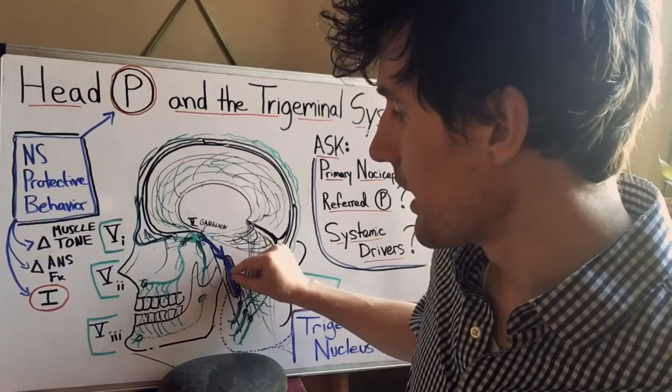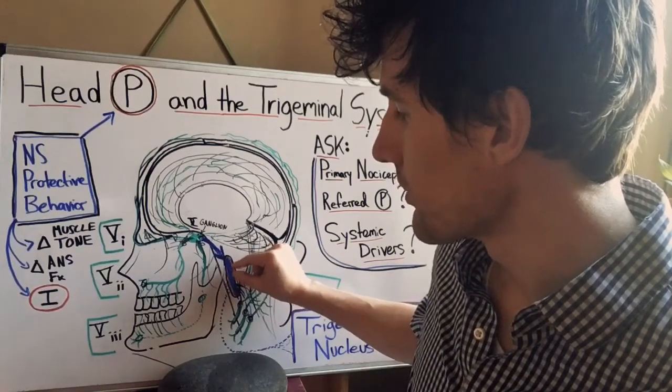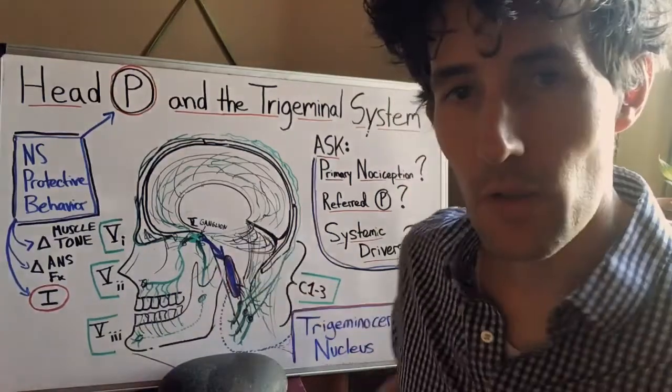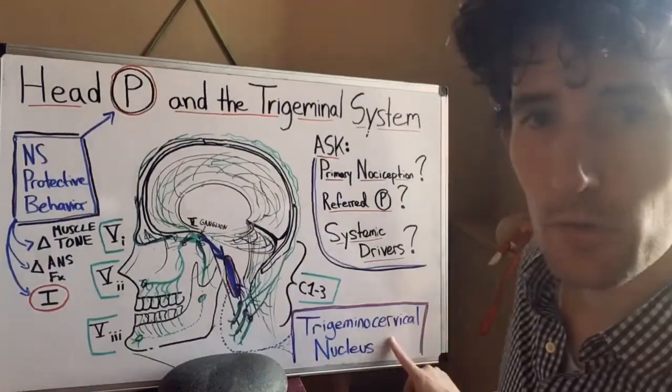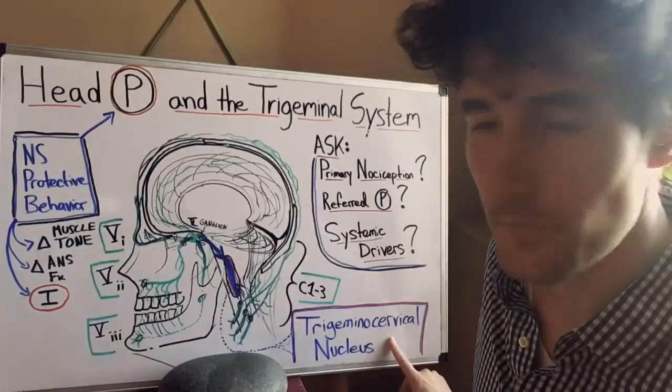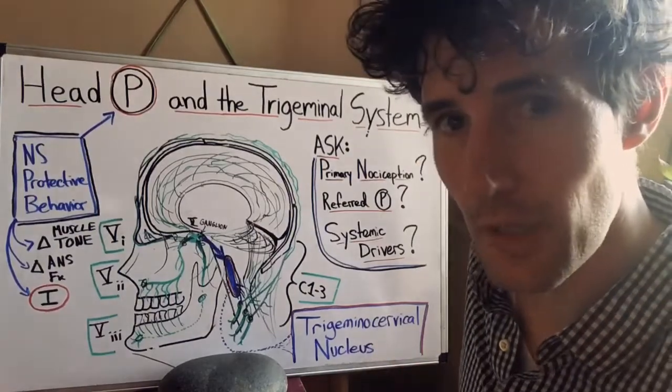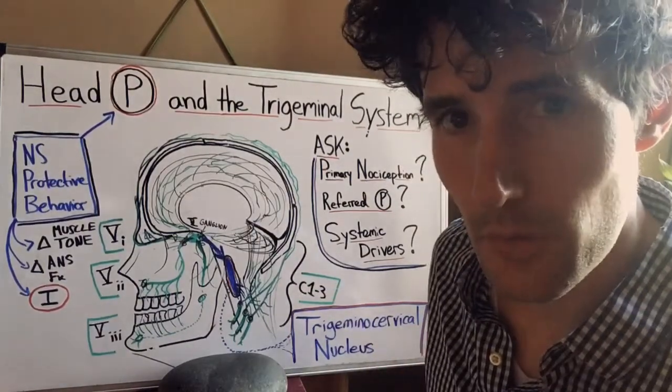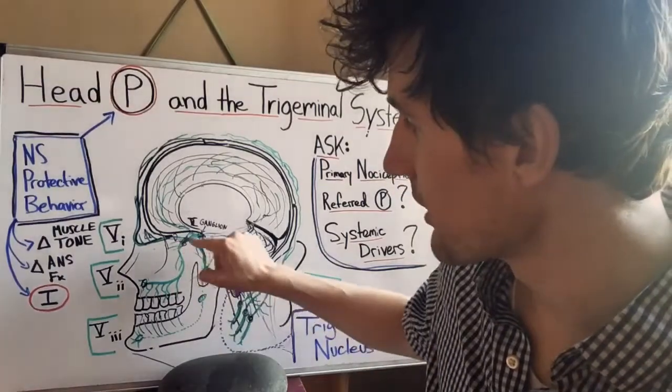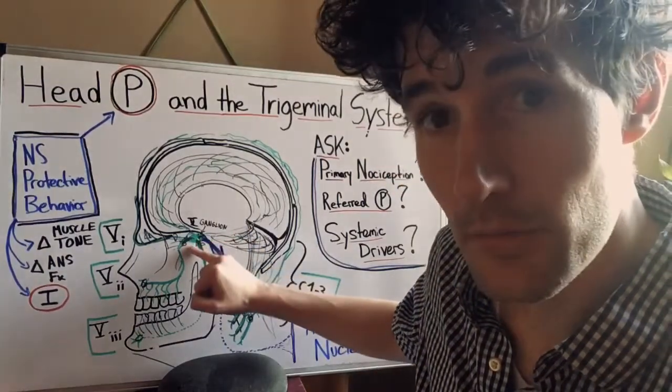And that is a chunk of central nervous system in the brainstem that we call the trigeminocervical nucleus.